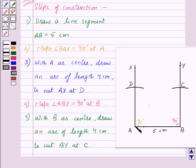So now, we have located all the points, that is, A, B, C and D. And now, to get the required rectangle, we just need to join DC. So let us join DC.